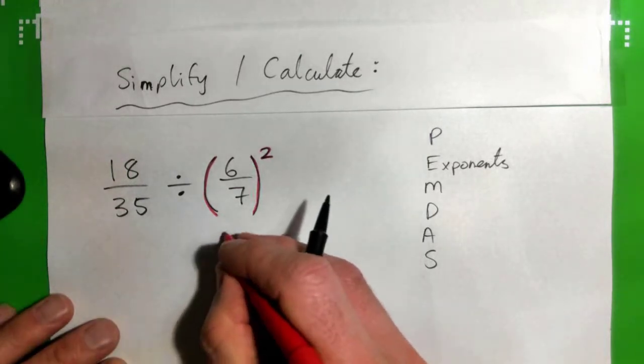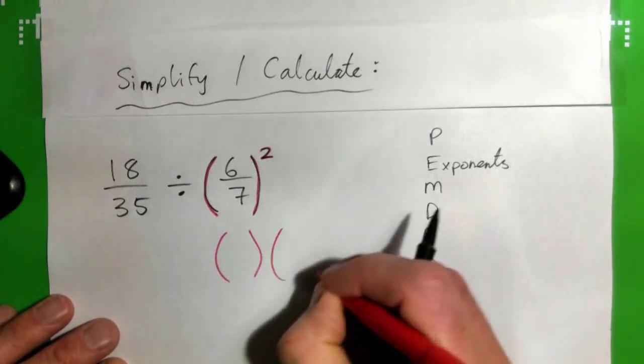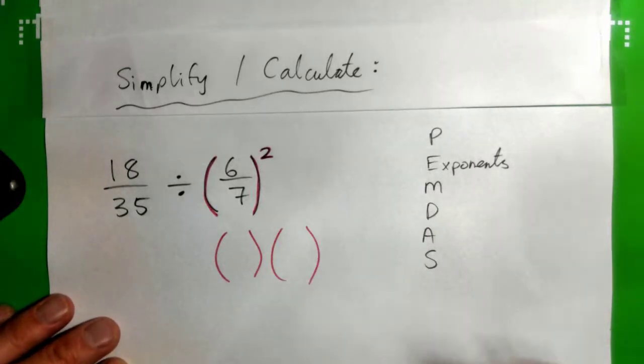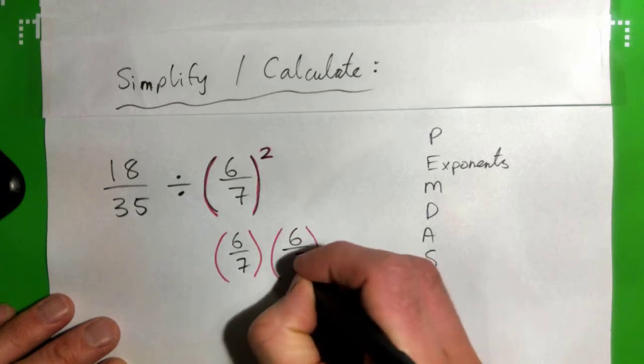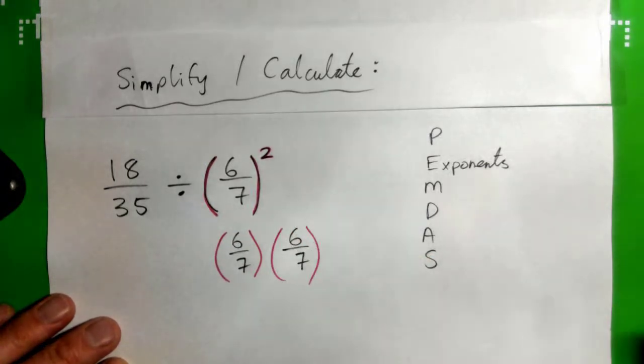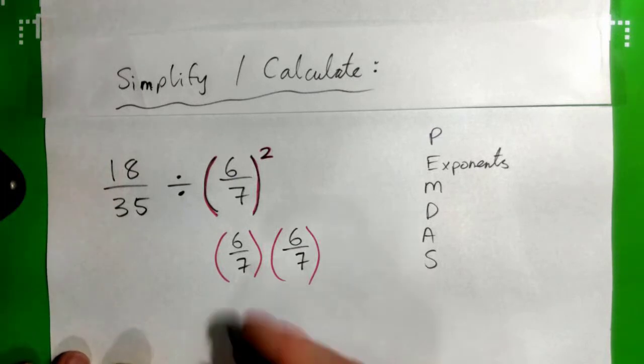So that would be that fraction times itself, right? So 6/7 times 6/7. I'm just going to multiply that because I think it's the simplest thing to do.